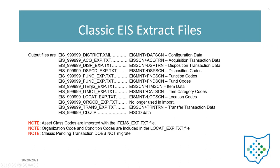Other transaction information and your items — the items_exp is coming from the item screen. Going back to your maintenance information, the item categories and locations are in those two files, coming from your maintenance programs cast screen and location screen. The org_cd_exp is no longer used, so you can just ignore that extract file — it's not going to get imported.